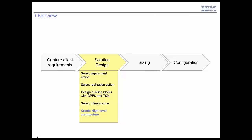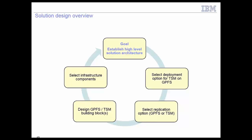Now with the details for each TSM instance captured, we can go into solution design. The solution design has the goal to establish a high-level solution architecture where components are arranged in a certain way that represents the solution. During solution design, we select a deployment option for Spectrum Protect on Spectrum Scale, select a replication option if the client needs high availability or disaster recovery, establish a Spectrum Scale and Protect building block, and then select the infrastructure for that building block. Once we have done this, we can establish a high-level solution architecture.